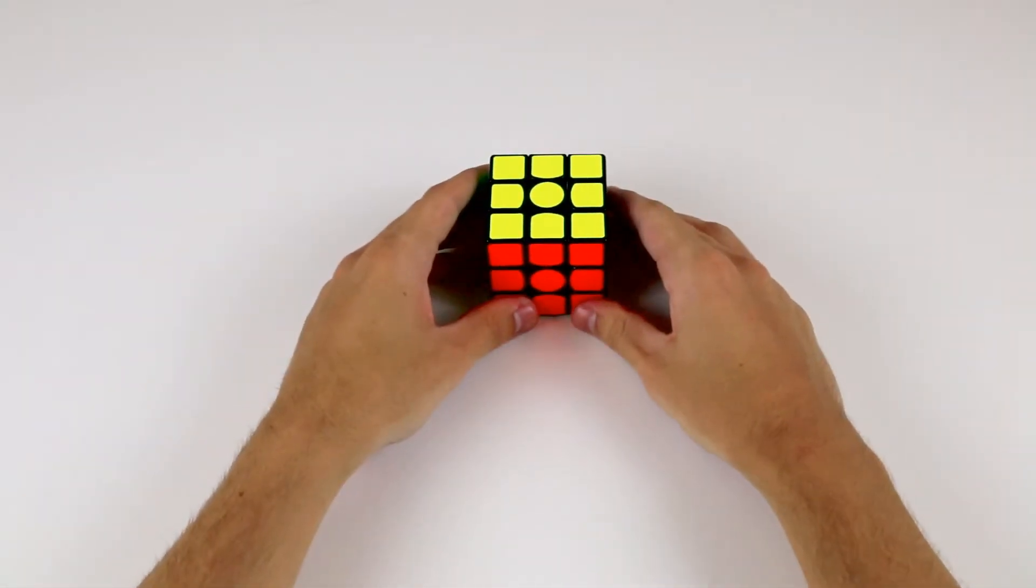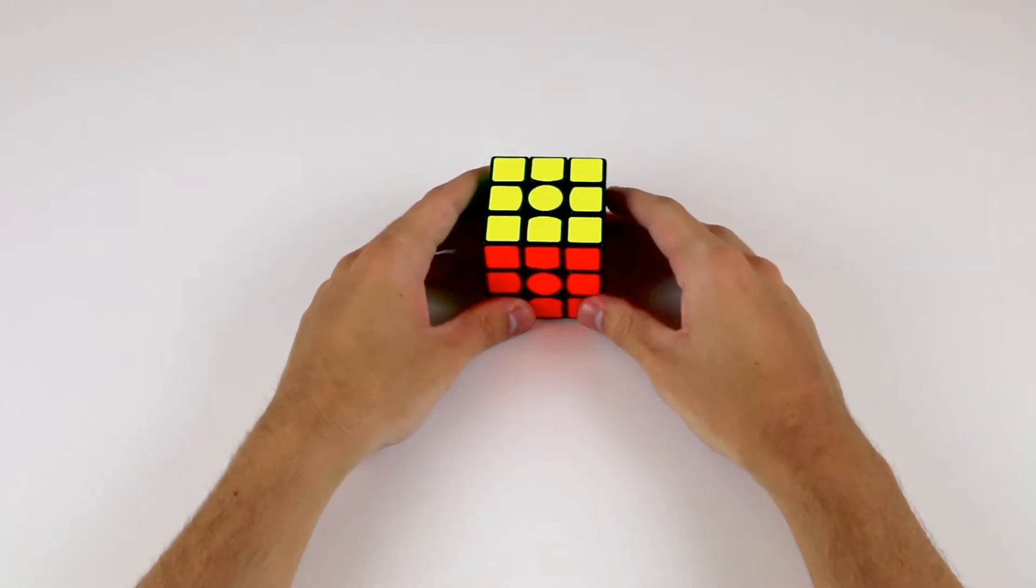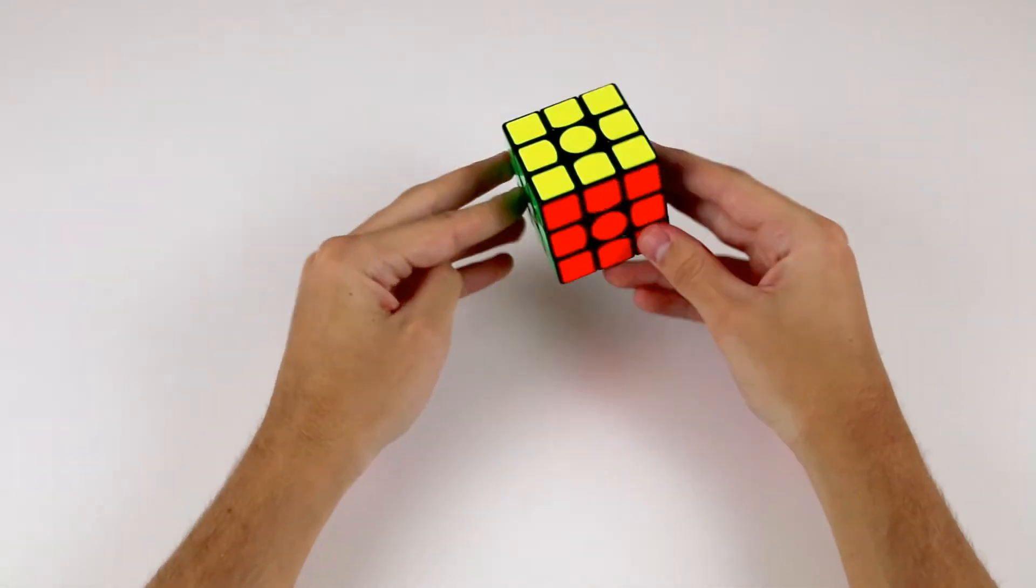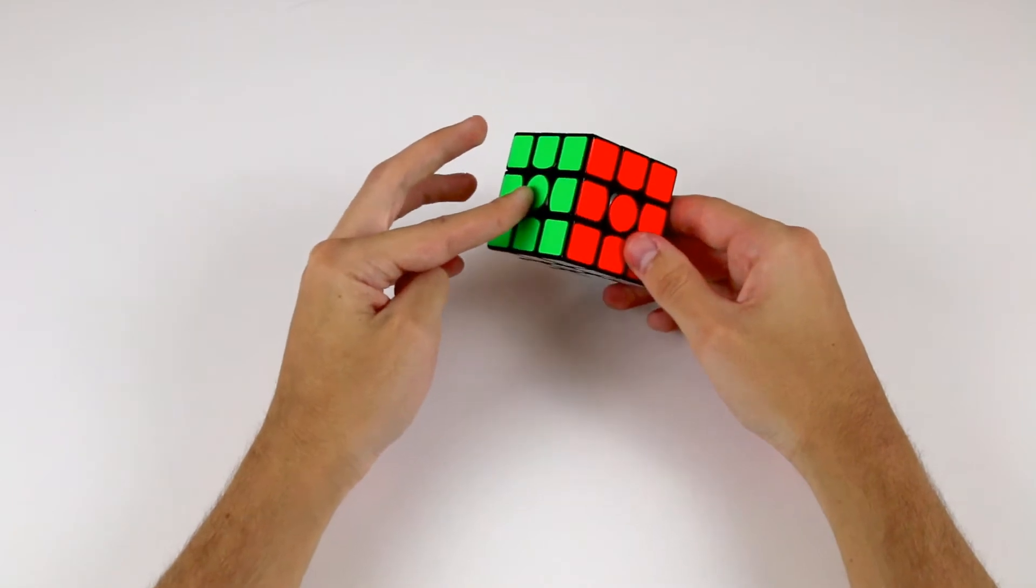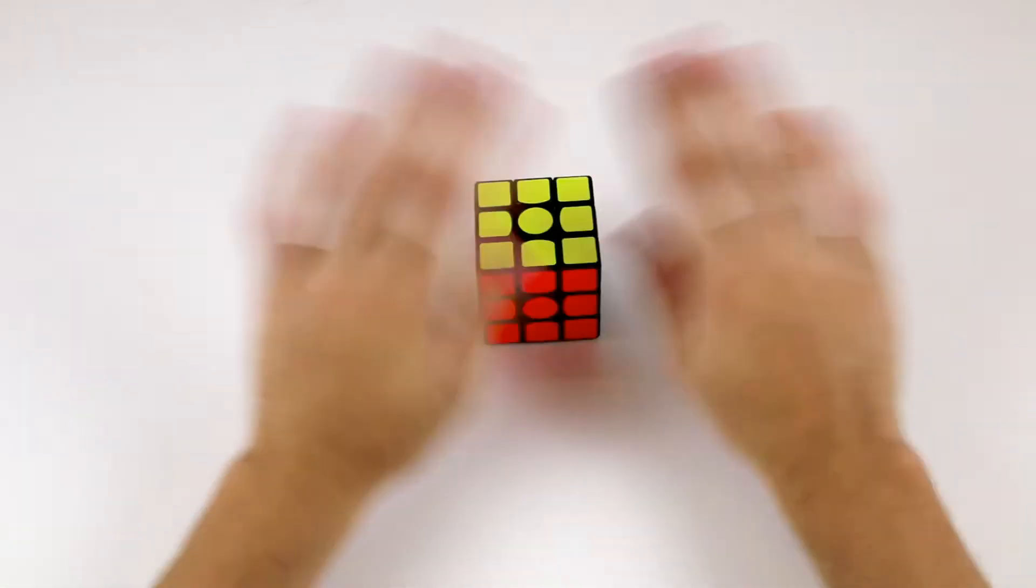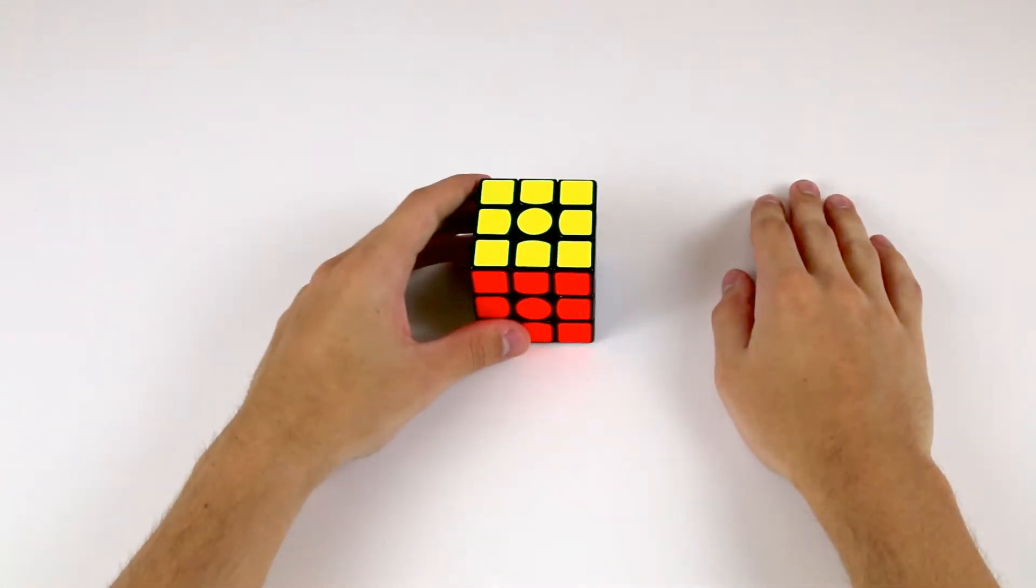Many people, when they first get a Rubik's Cube, try and think about it in terms of sides. For example, there are six sides of a Rubik's Cube, so we should solve one at a time. This is completely incorrect, and it's not the way that we're going to think about it at all.